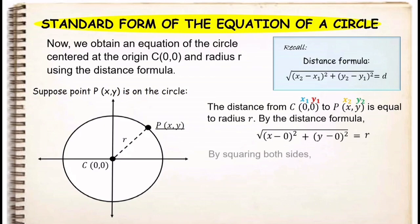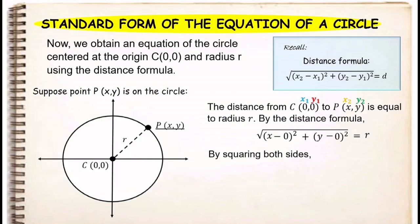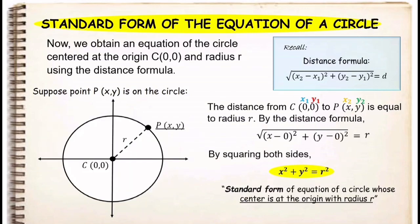By squaring both sides, the square root symbol is eliminated, and we are then left with x squared — because (x minus 0) squared is x squared — plus y squared — because (y minus 0) squared is y squared — equals r squared. This is the standard form of the equation of a circle whose center is at the origin with radius r.